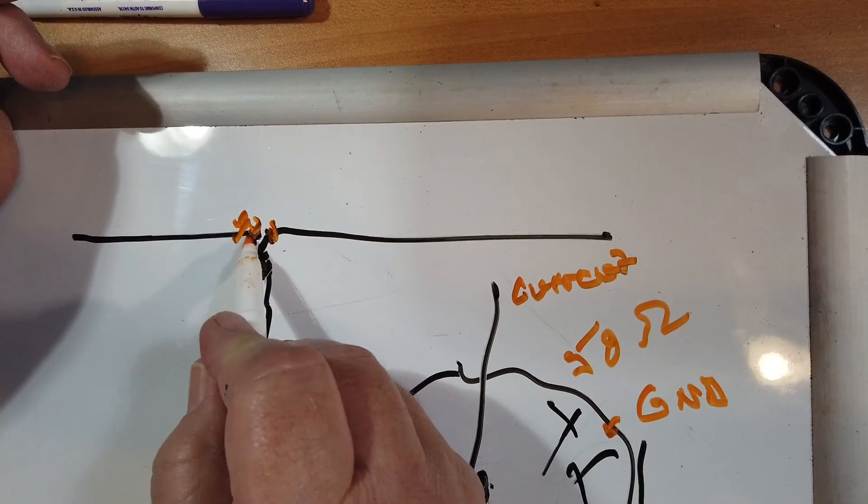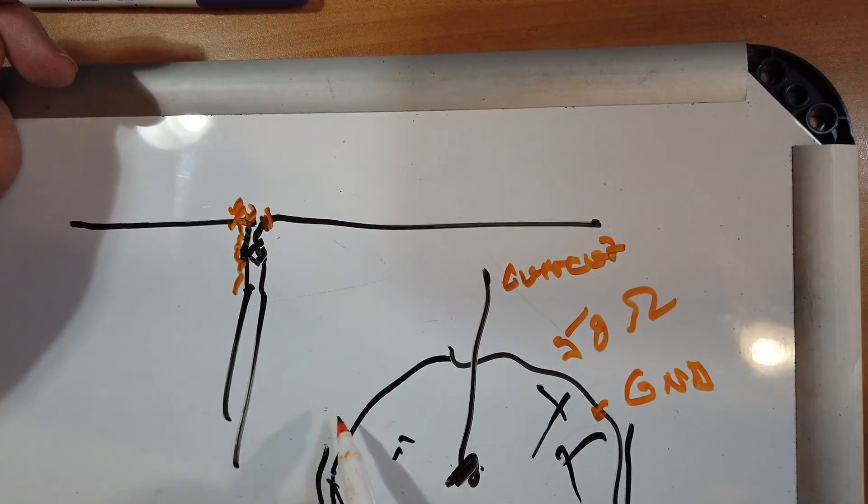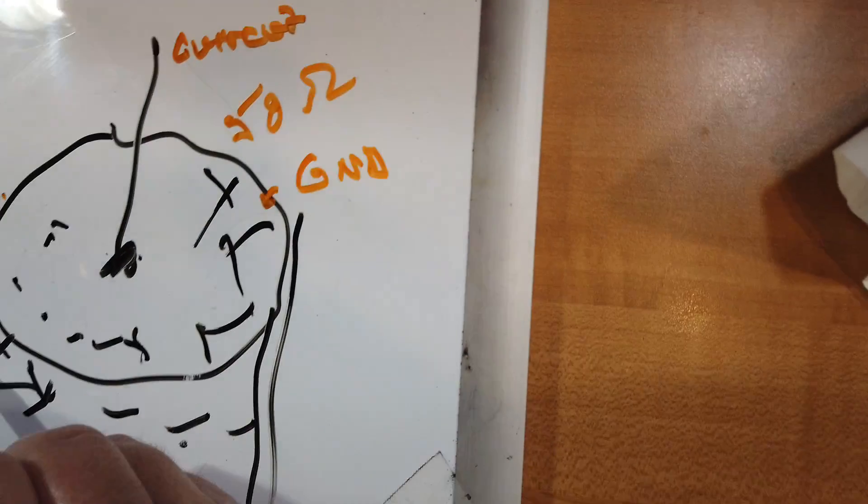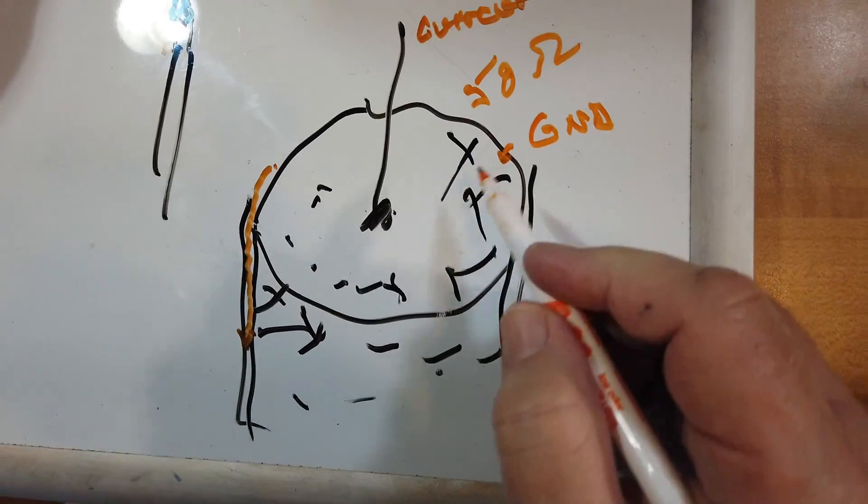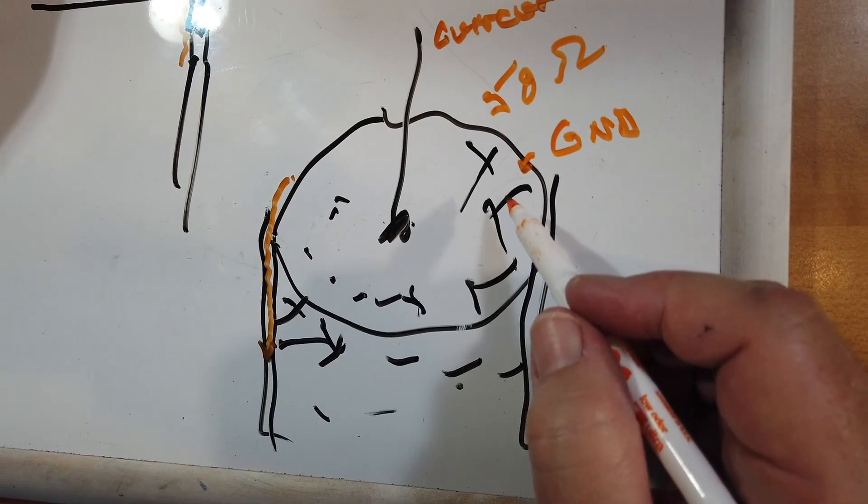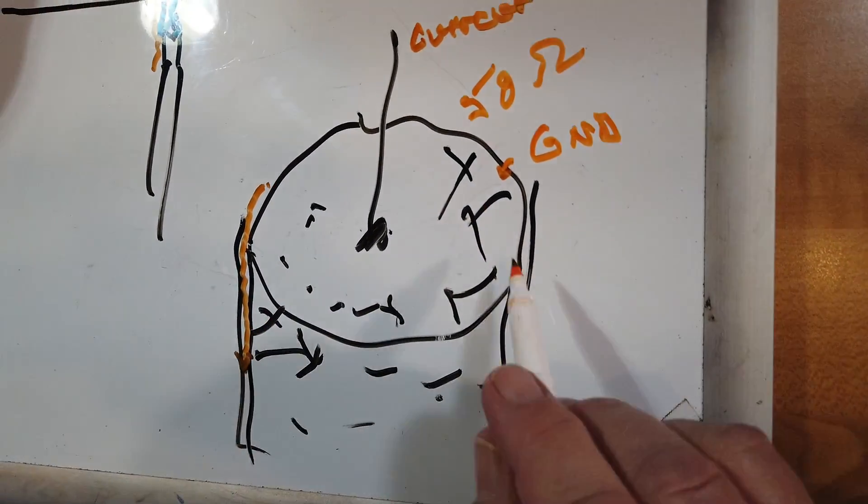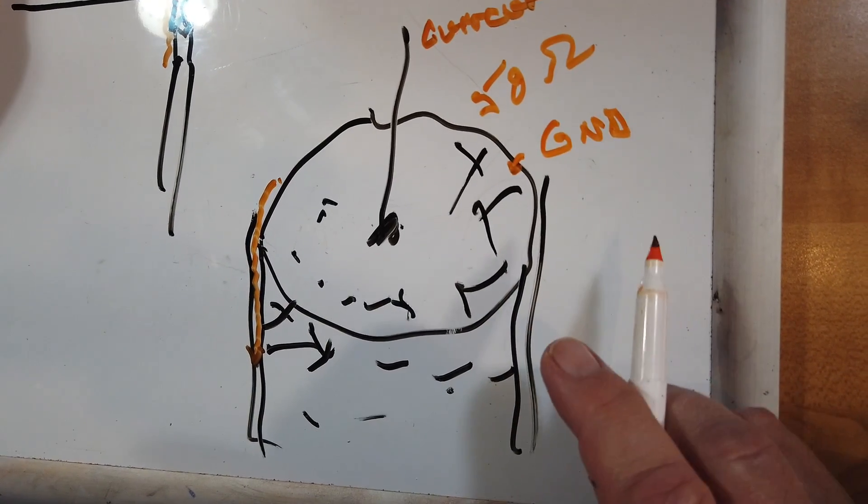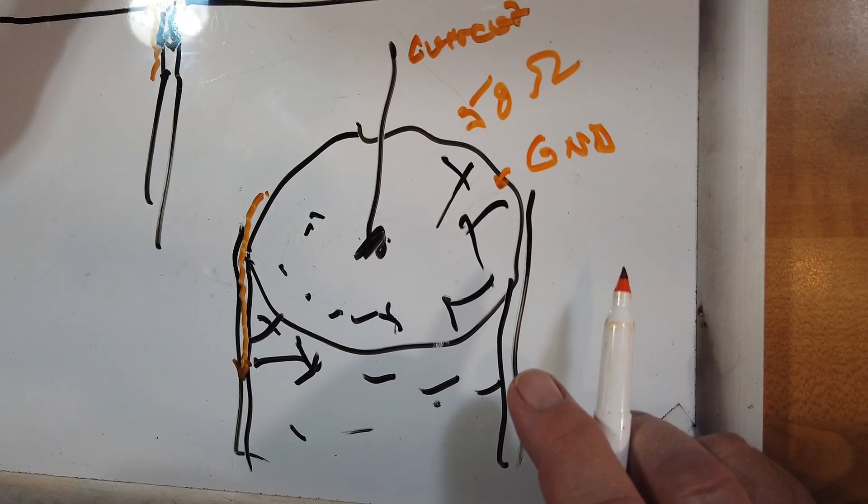And when you do that, you get a little reflection, and it comes down the outside of the coax here. Now, this is one of the oddities about RF. RF in a cable behaves very differently from RF in a circuit.